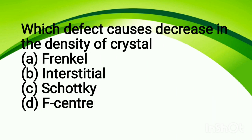Which defect causes a decrease in density of a crystal? Option A, Frenkel defect; option B, instantaneous; option C, Schottky defect; option D, F center. The correct answer is the Schottky defect.